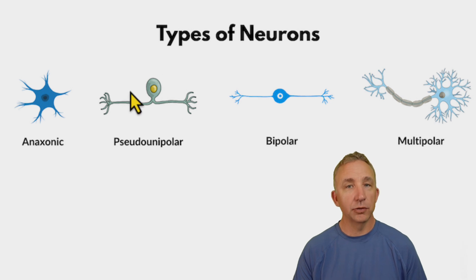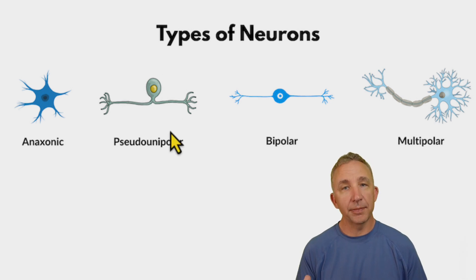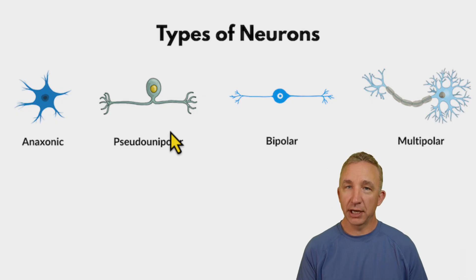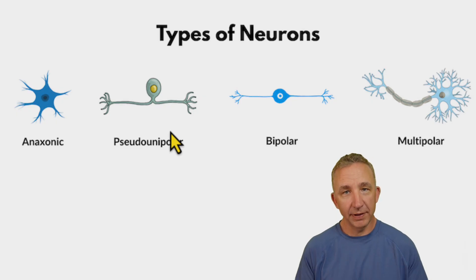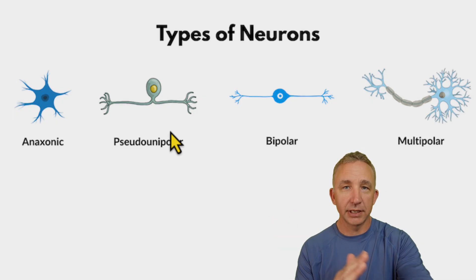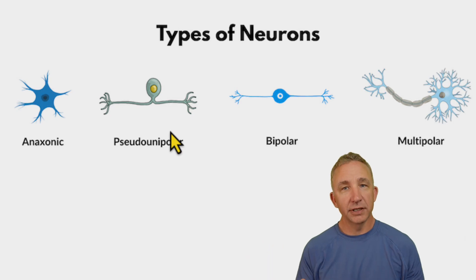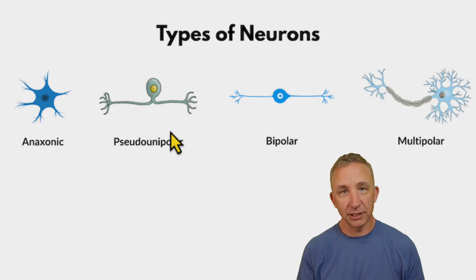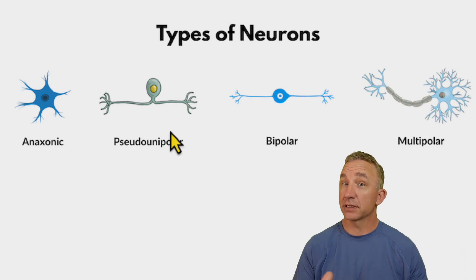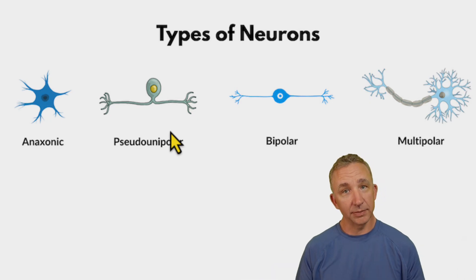The majority of our pseudo-unipolar neurons have a primary function of sensory — but more of a general standpoint. So when we talk about a reflex arc, whether I feel this, or this, or this, it feels the same. I refer to that as a general sensation, because it feels the same in different parts of the body, and I can interpret it and talk to my central nervous system.